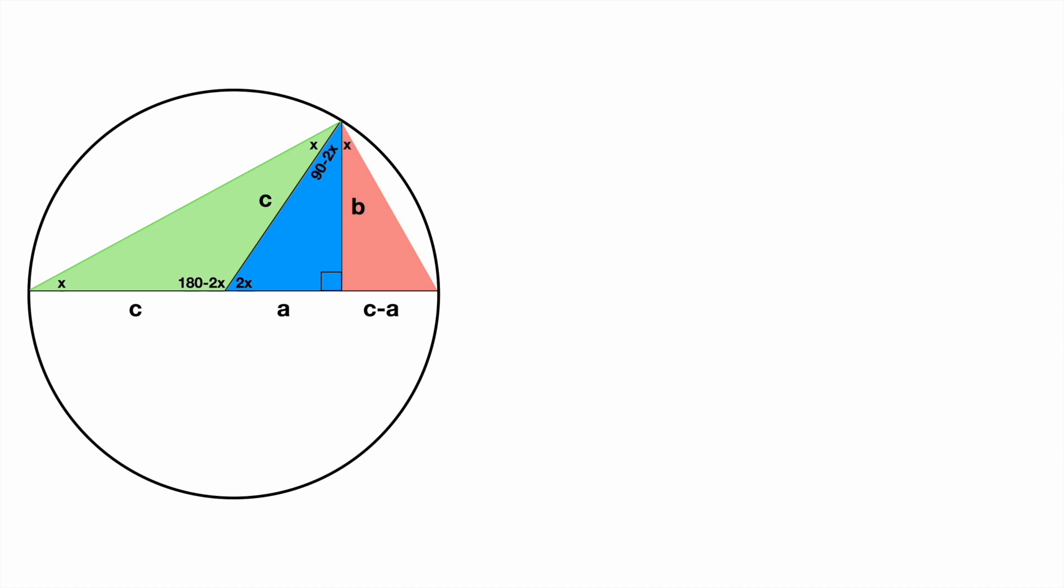We know two angles in the red triangle, so to find the third one, we repeat the same process as on previous triangles, to end up with 90 minus x.